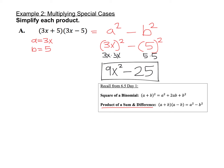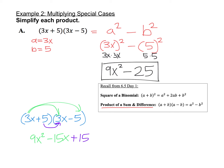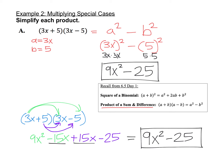It would also be fine to do this problem with FOIL or with a box. Using FOIL: 3x times 3x is 9x squared, 3x times negative 5 is negative 15x, 5 times 3x is positive 15x, and 5 times negative 5 is negative 25. The negative 15x and positive 15x cancel out to zero, leaving just 9x squared minus 25 — the same answer as the formula. If you made a box with sides 3x plus 5 and 3x minus 5, you'd also end up with the same answer.